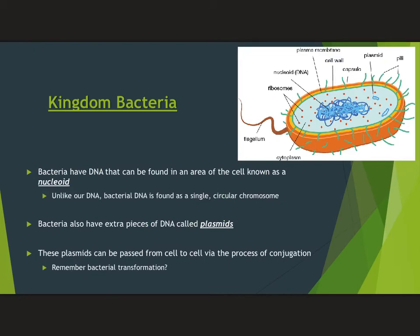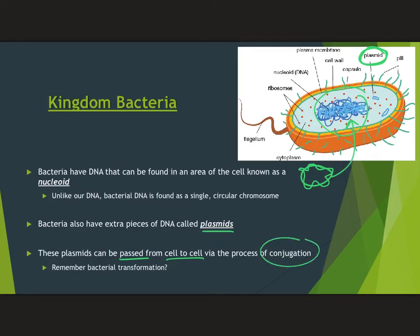Bacteria do still have DNA. They typically have a single circular chromosome — it's double-stranded like ours, but it's a loop of DNA — found wadded up in the middle of the cell in an area referred to as the nucleoid. The other interesting thing about bacteria is that they have things called plasmids, which are extra little pieces of DNA. We don't have this. What makes this really cool is that plasmids can pass from cell to cell — we call this conjugation.